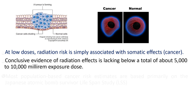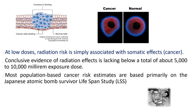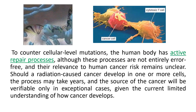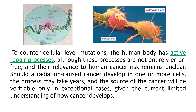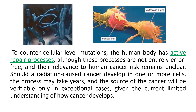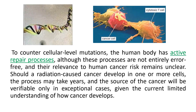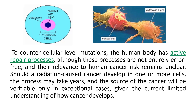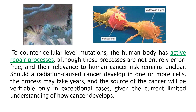There is no other damage to the cell. There is conclusive evidence of radiation effects lacking below a total of 5,000 to 10,000 millirem exposure dose — in other words, we have no evidence that there is any damage below this level. Most population-based cancer risk estimates are based primarily on the Japanese atomic bomb survivor lifespan study. Our own bodies counter the damage by ionizing radiation at the cellular level. To counter cellular mutations, the body has an active repair process: most cells that have interacted will be repaired, a few may die, and a rare few may mutate.